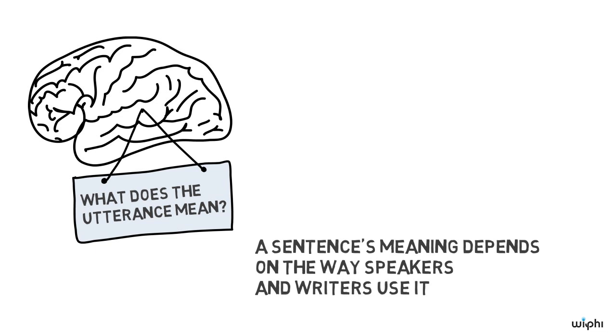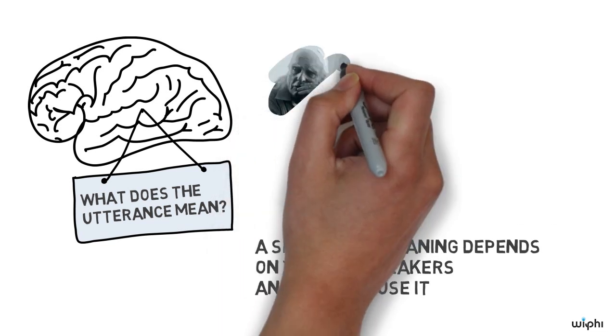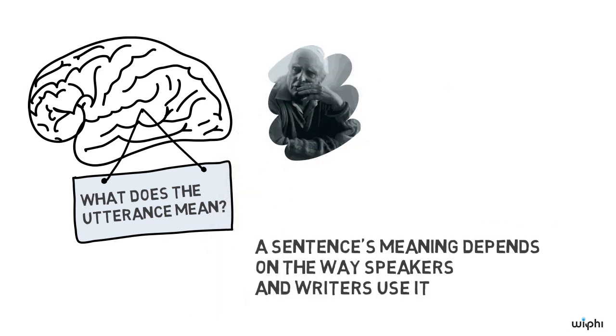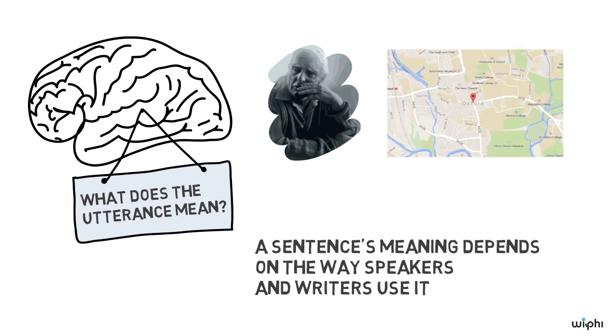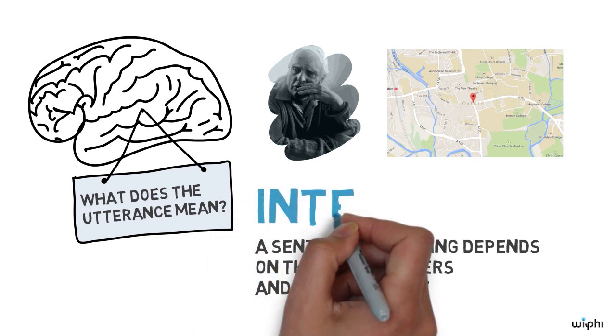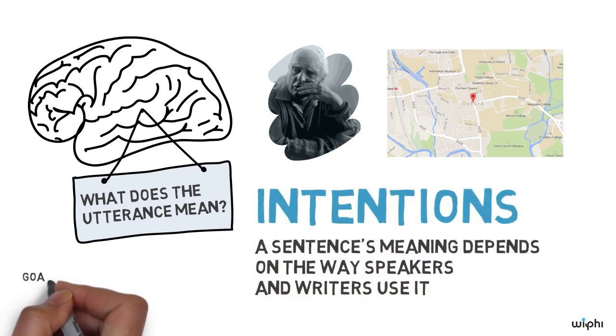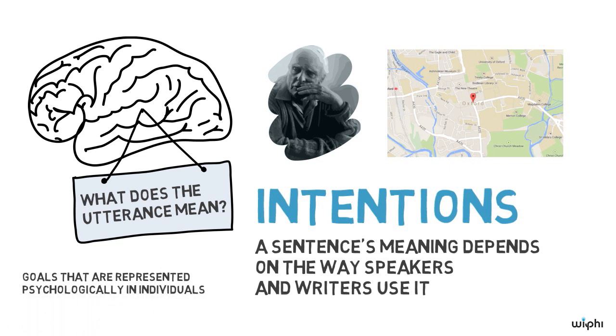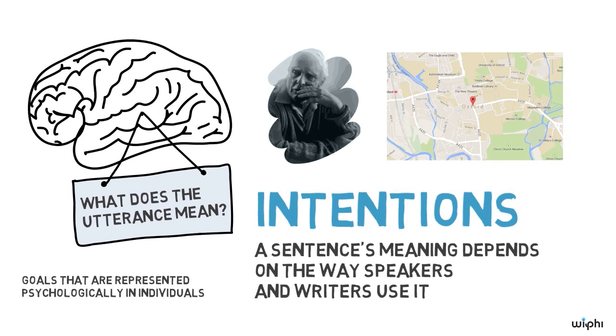Grice argued that a sentence's meaning depends on the way speakers and writers use it. If speakers tend to use, Grice lived in Oxford, to mean that a particular person resided in some town in England, then that is what it means. So in this way, certain sounds and marks are meaningful due to intentions. Intentions are goals that are represented psychologically in individuals, so this is an internalist theory.